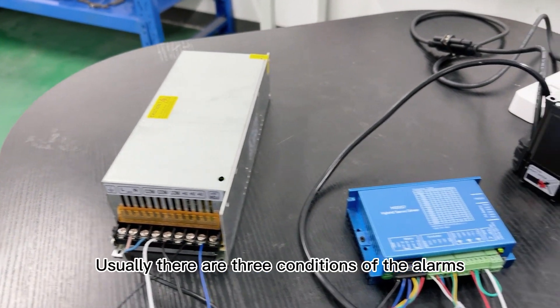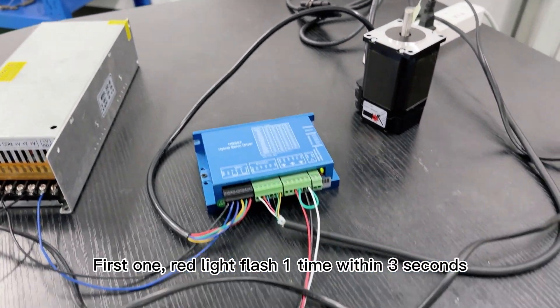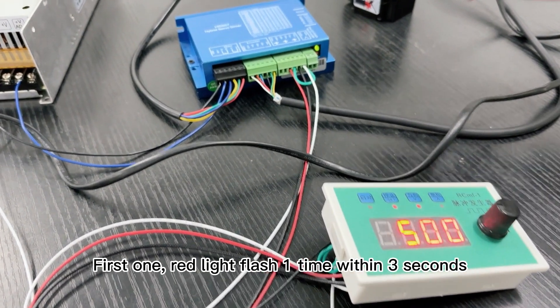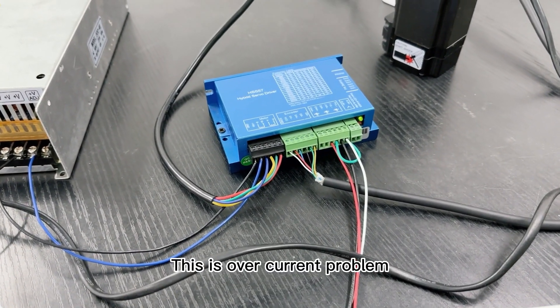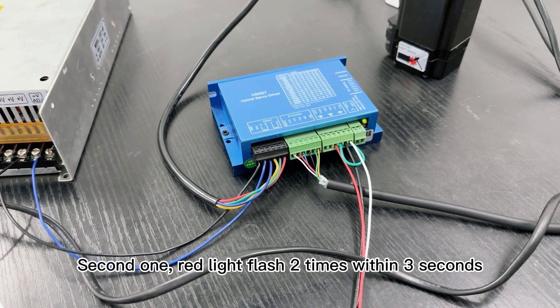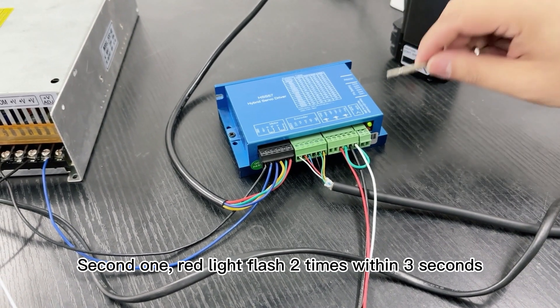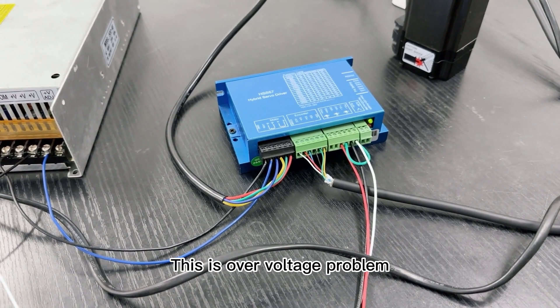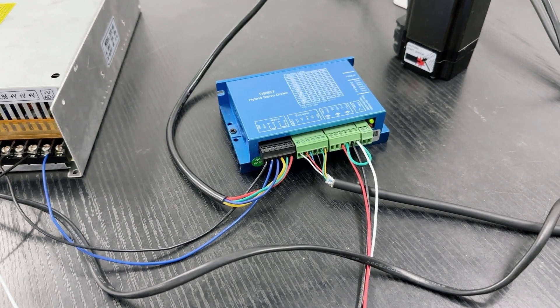Usually there are three conditions of the alarms. First one: red light flash one time within three seconds. This is over current problem. Second one: red light flash two times within three seconds. This is over voltage problem.